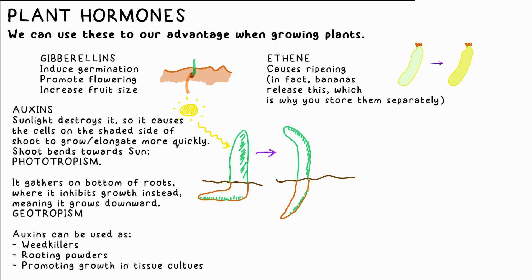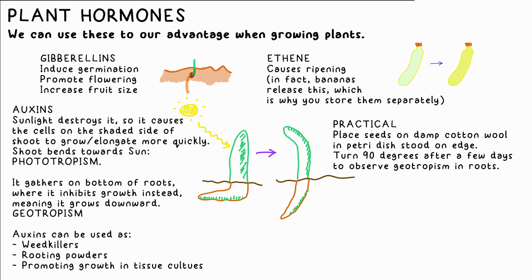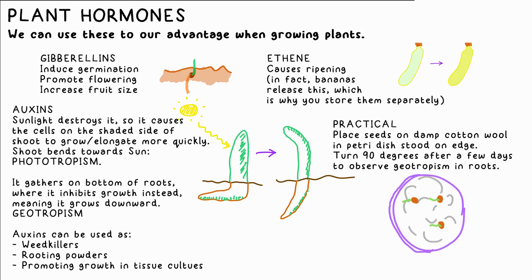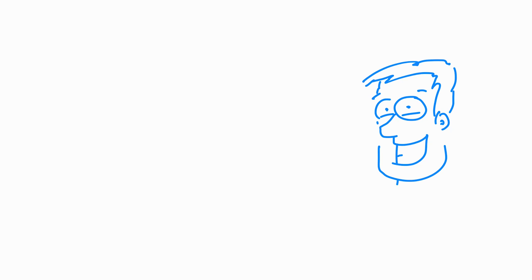We can also use auxins as weed killers, rooting powders, and for promoting growth in tissue cultures. For a mini investigation: place seeds on damp cotton wool in a petri dish, stand the petri dish on its side, leave it for a few days, then turn it 90 degrees. You should see that the roots have bent in that time, proving that geotropism is true for roots.